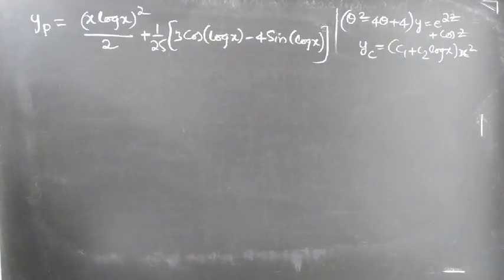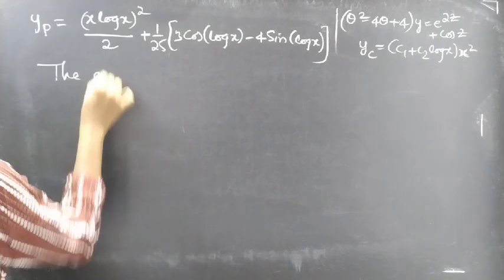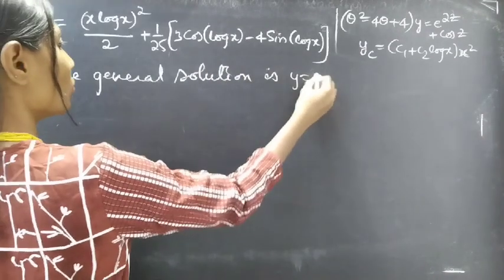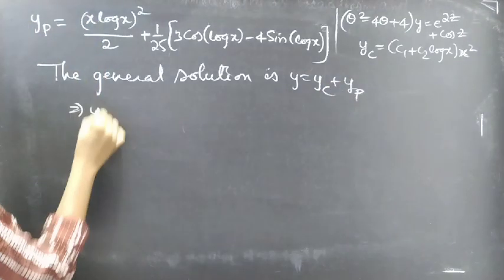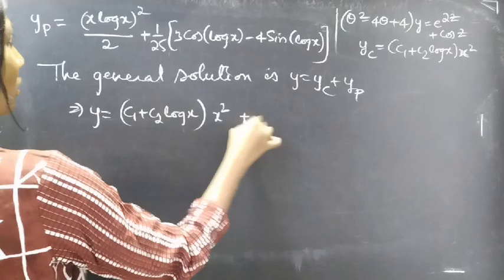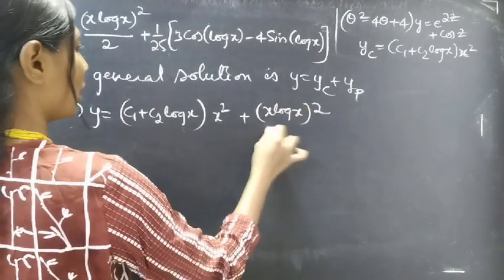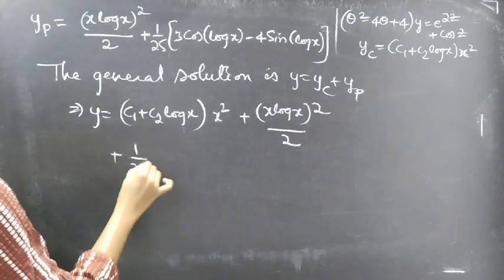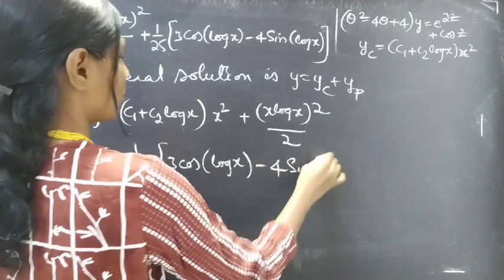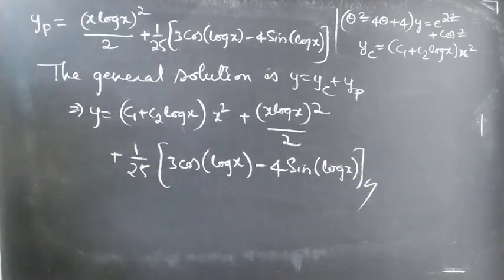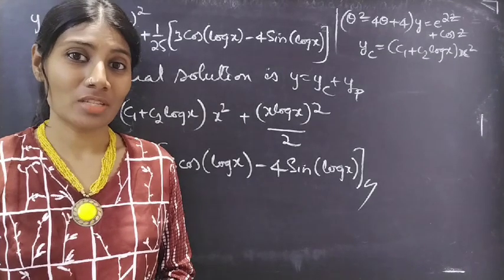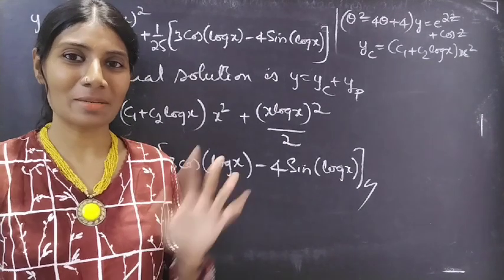The general solution is y equals yc plus yp. Therefore y equals (c₁ plus c₂·log x)·x² plus x²·(log x)²/2 plus (1/25)·(3·cos(log x) minus 4·sin(log x)). So this completes the problem. We have seen a problem from higher order linear differential equations with variable coefficients in this video. Hope you understand, and see you in the next video. Bye bye.